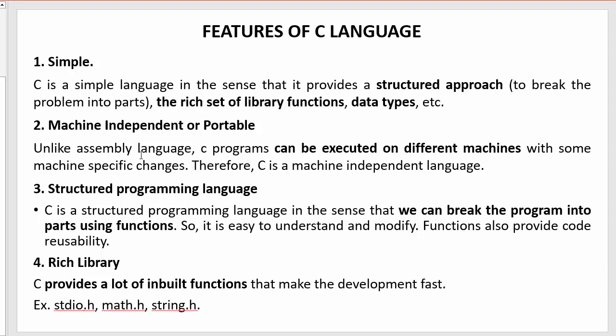If you have written any program using C language in one operating system, then you can easily execute the same program in another system. Once you write instructions using assembly language for one platform, you can hardly port or use the same program on another platform or operating system. But C language is not like that — you can easily execute a C program in another operating system or platform as well. That's why C is termed as machine-independent or portable.